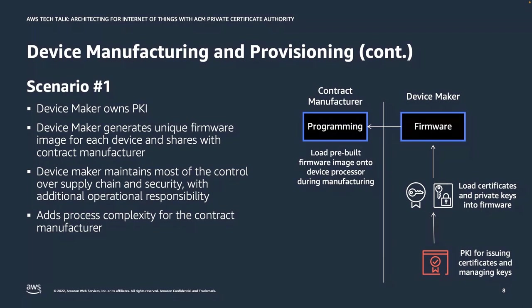However, this setup does add complexity to the manufacturing process, and the device maker also takes on a lot of operational burden — operating outside of their primary line of business. If they are operating multiple product lines with thousands of devices and multiple external supply chain partners, this setup adds a great deal of complexity to the overall process.